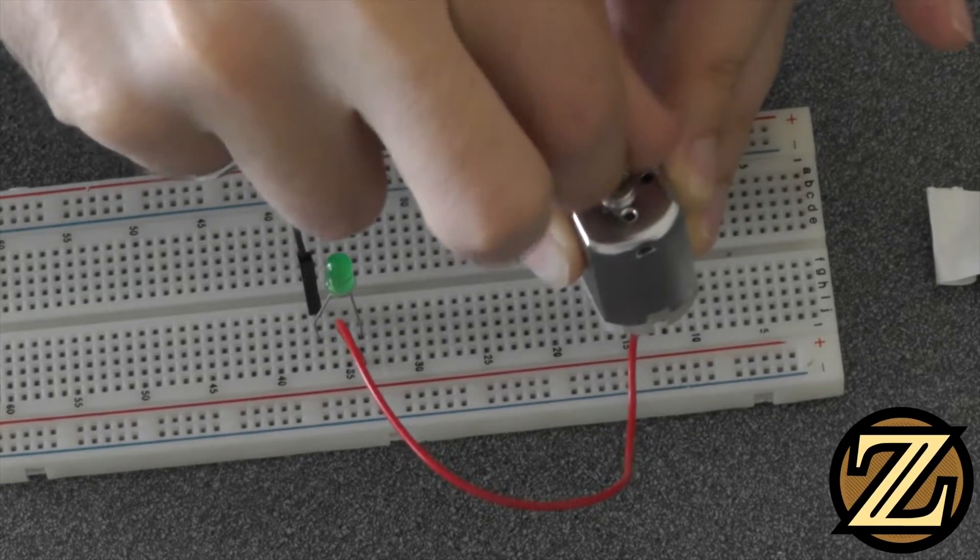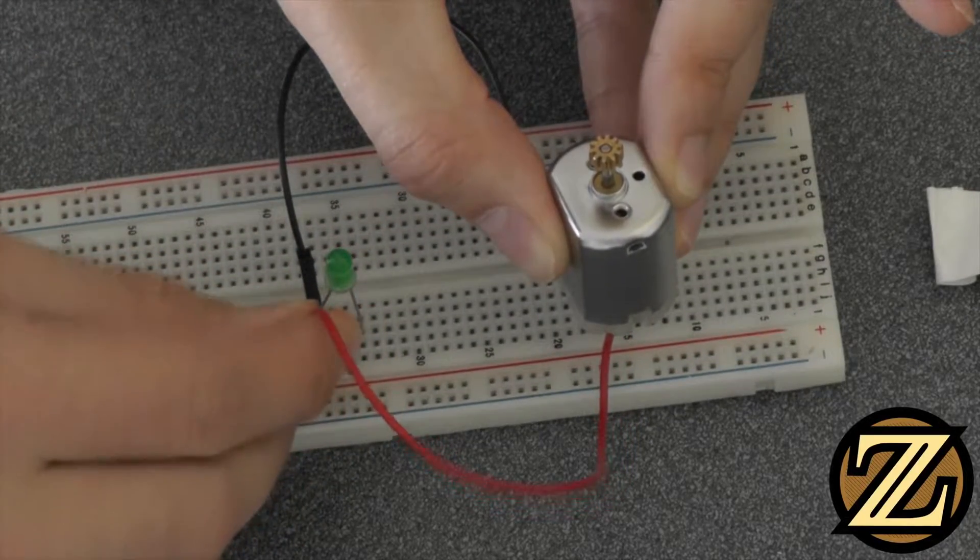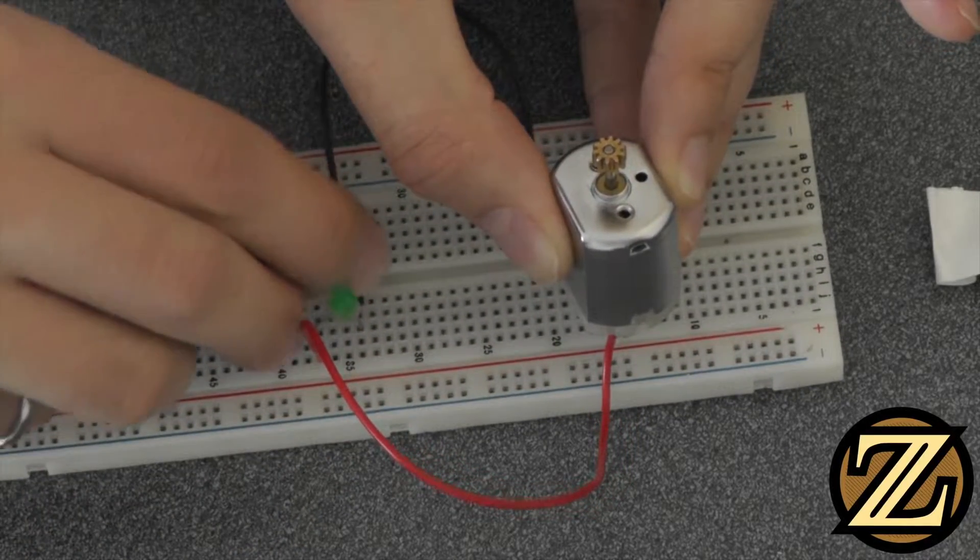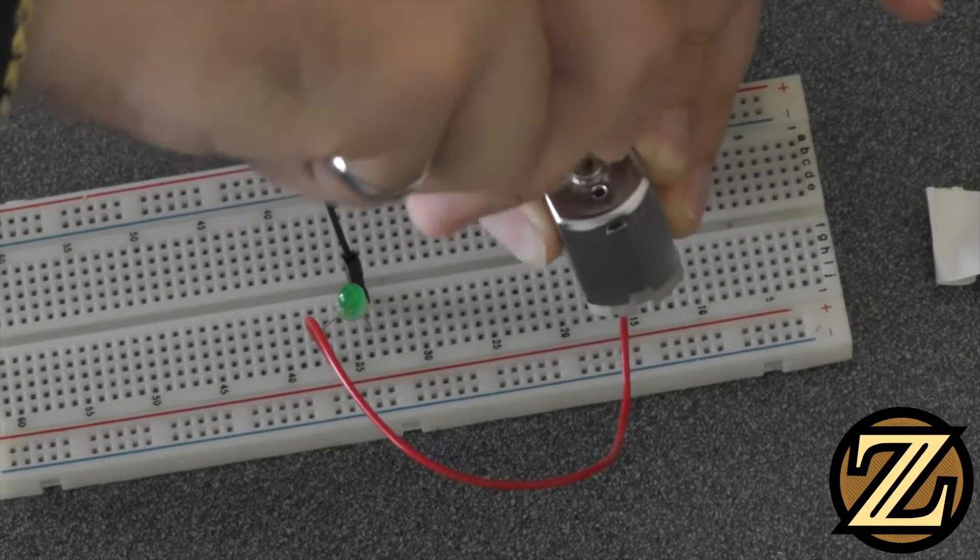Generators and motors are similar in design. Try connecting your motor to just a LED and spin the motor. You will be able to light up the LED. This is the potential created from the momentum of the motor that we are trying to dissipate in a safe way.